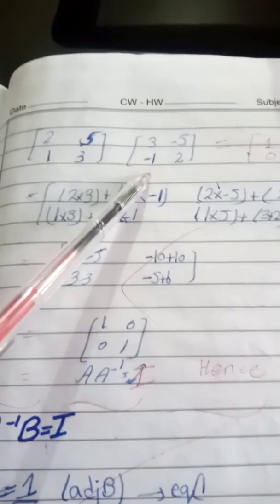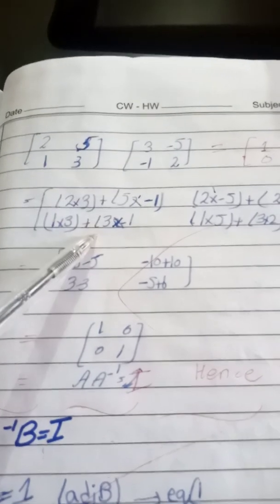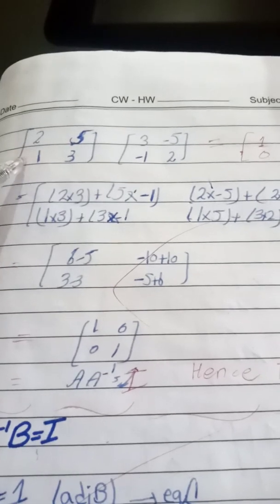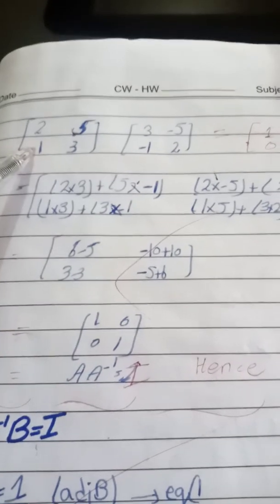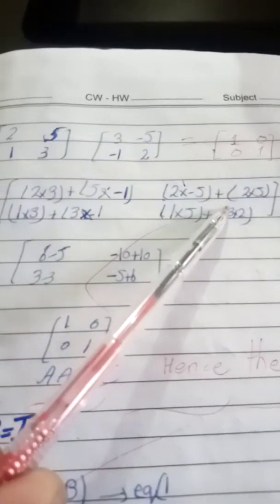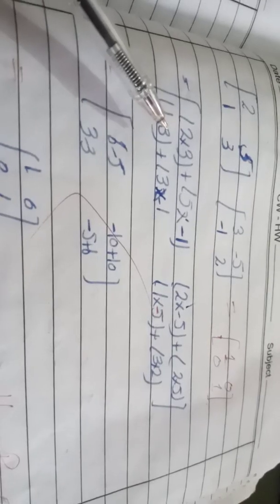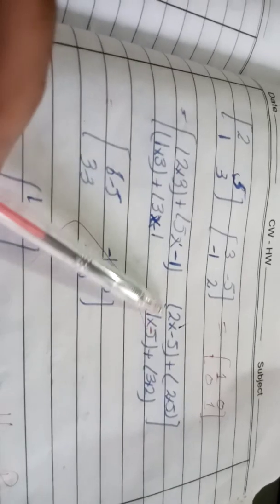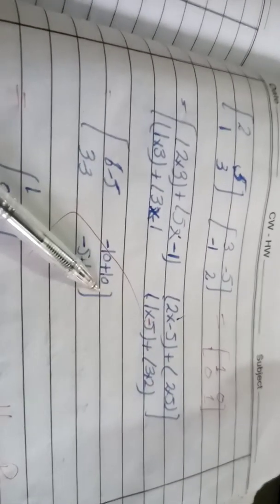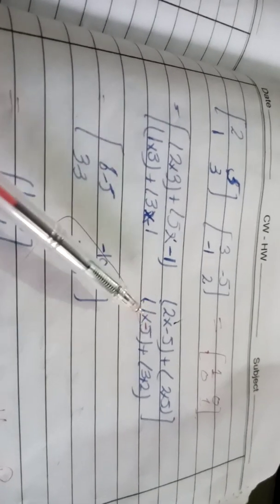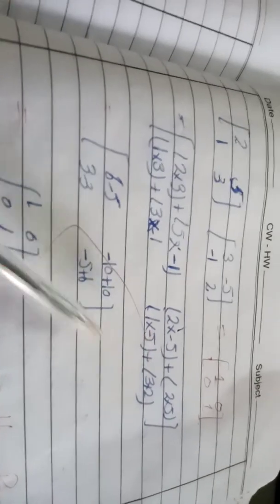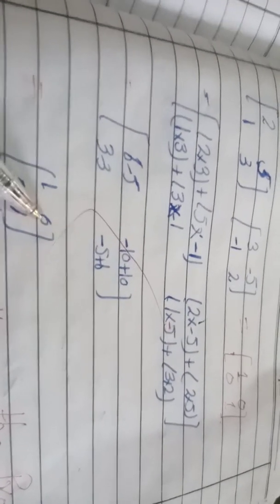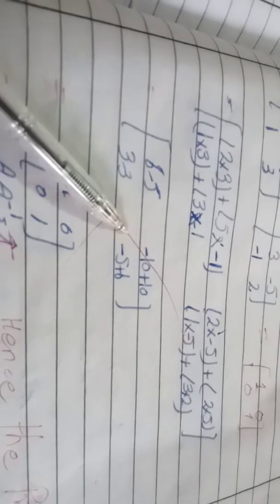Then second row times first column: 1 multiplied by 3 plus 3 into minus 1. Then second row times second column: 1 into minus 5 plus 3 into 2. Computing the results: 6 minus 5 gives 1; minus 10 plus 10 gives 0; 3 minus 3 gives 0; and 6 minus 5 gives 1.